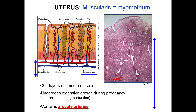During each monthly cycle, the ovarian hormones promote the proliferation of the endometrium and prime the uterus to receive an embryo. If pregnancy doesn't occur, most of the endometrium will slough off and regenerate in the following weeks. This process occurs in the body, fundus, and isthmus of the uterus. However, the cervical wall differs from the rest of the uterus, and so it changes less dramatically during the cycle.